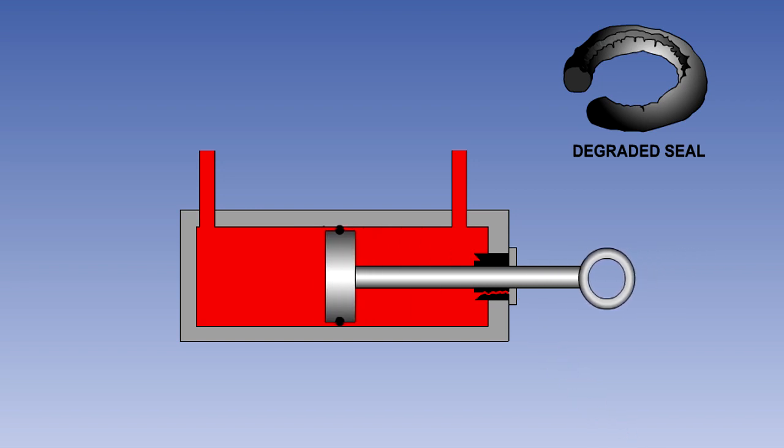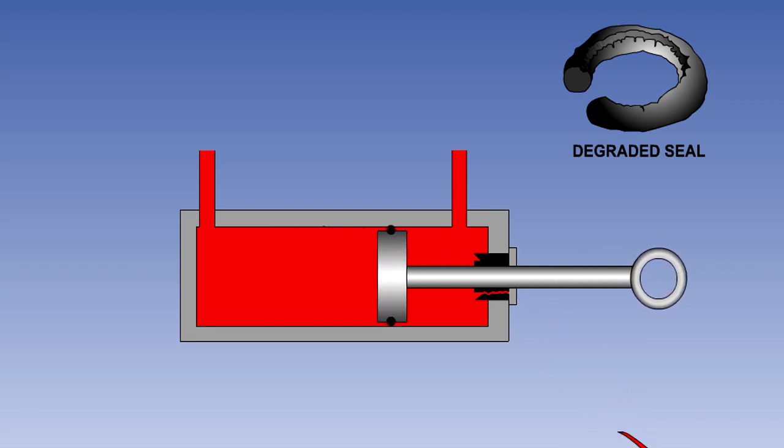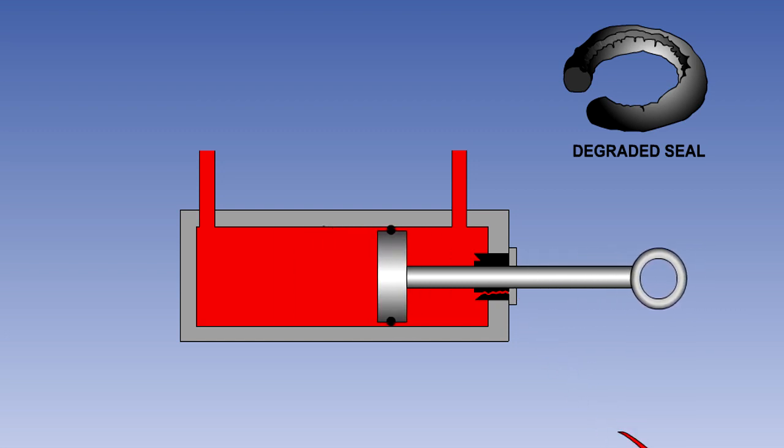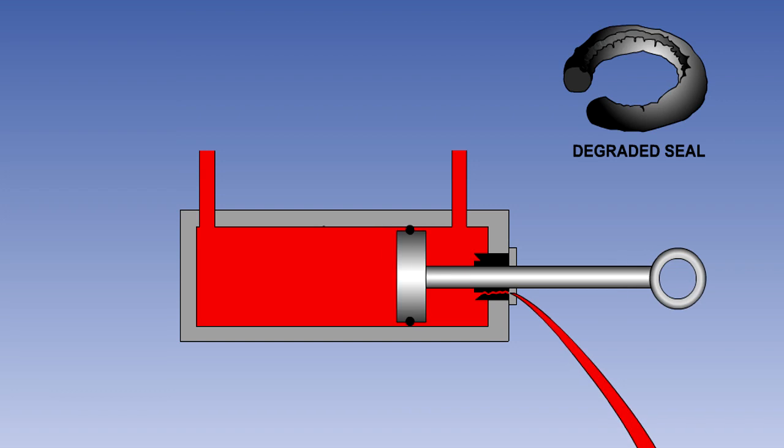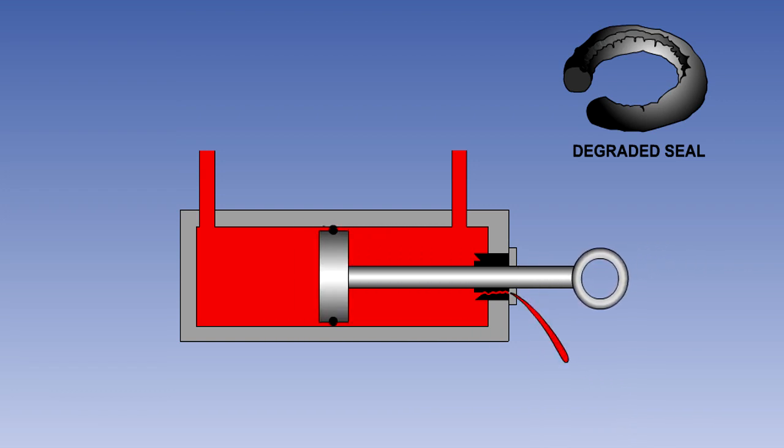Seals are made in a variety of materials, depending on the type of fluid with which they are to be used. If a seal of an incorrect material is used in a system, the sealing quality will be seriously degraded, and this may lead to failure of the component.